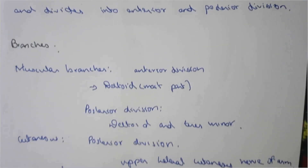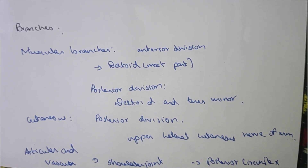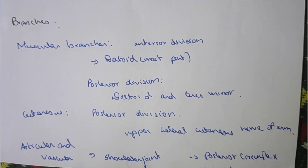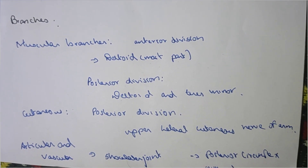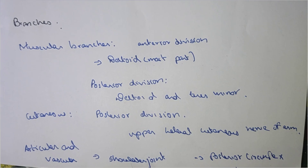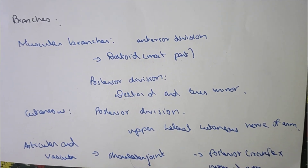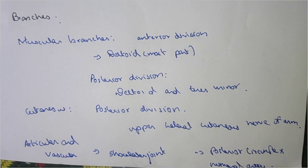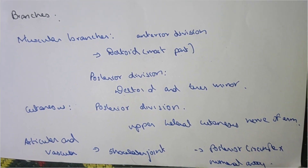There are different branches of the axillary nerve: muscular branches, cutaneous branches, as well as articular branches. The muscular branches include the anterior division, which supplies the deltoid muscle, and the posterior division, which supplies the deltoid as well as the teres minor muscle.